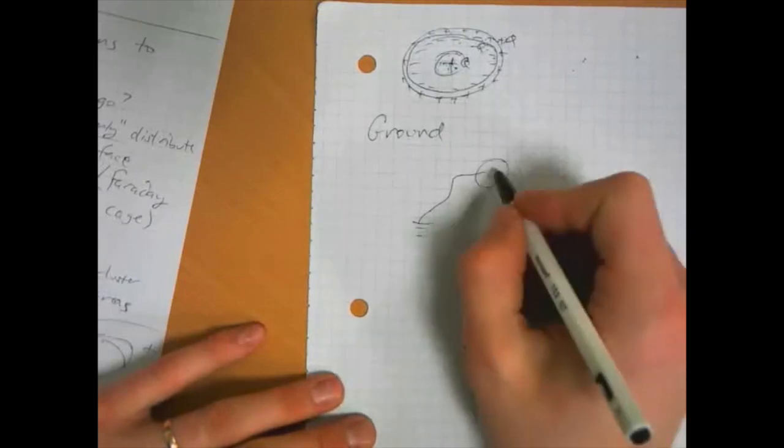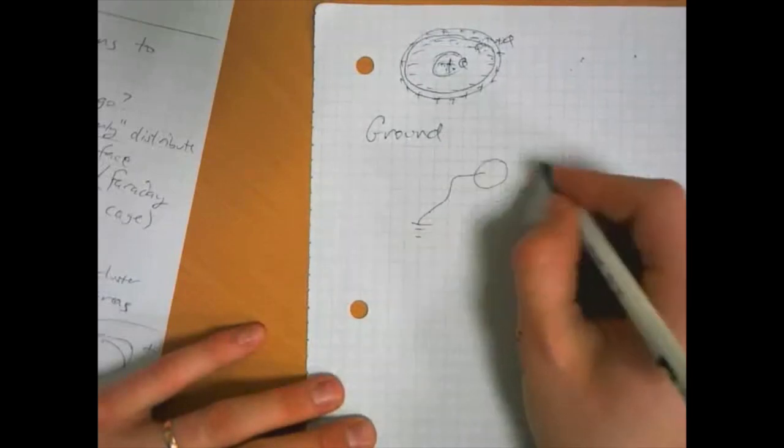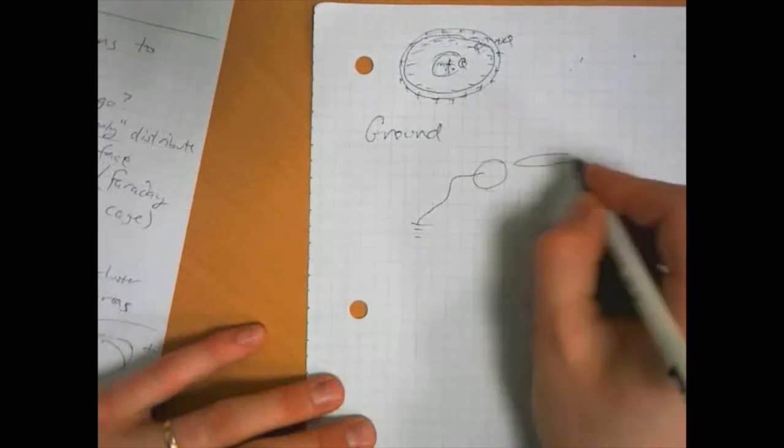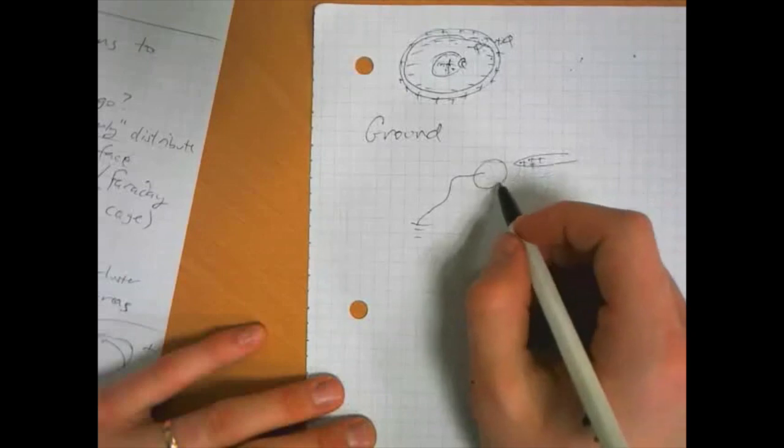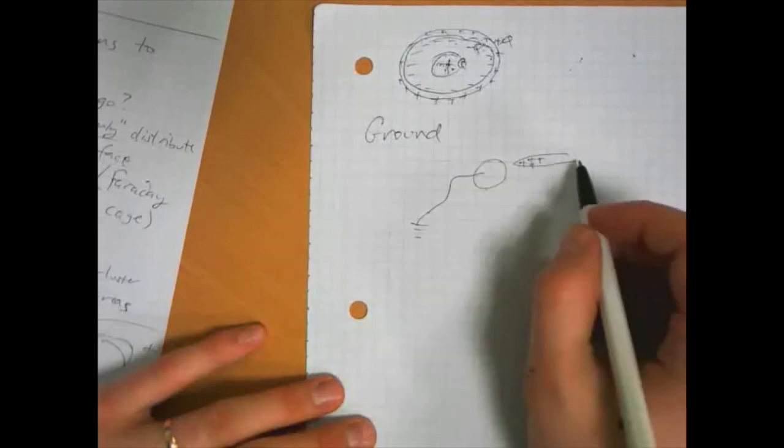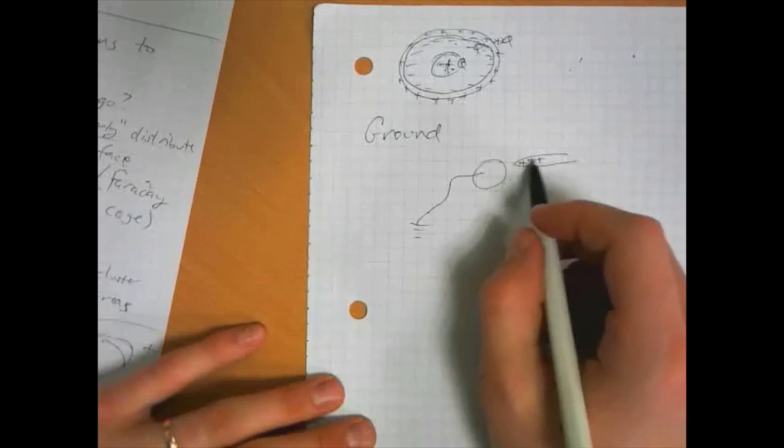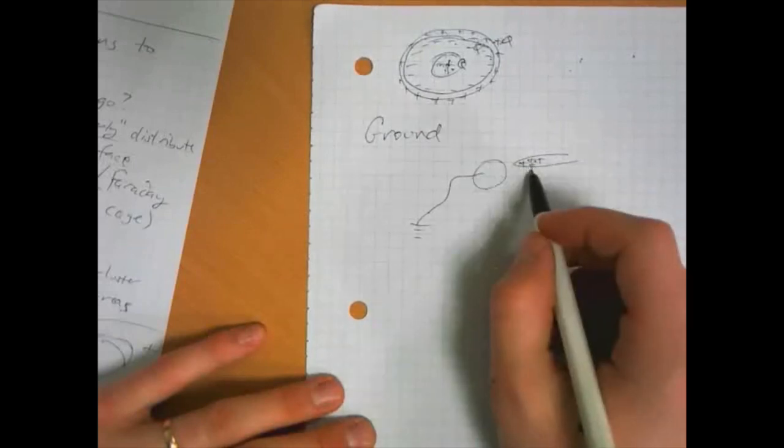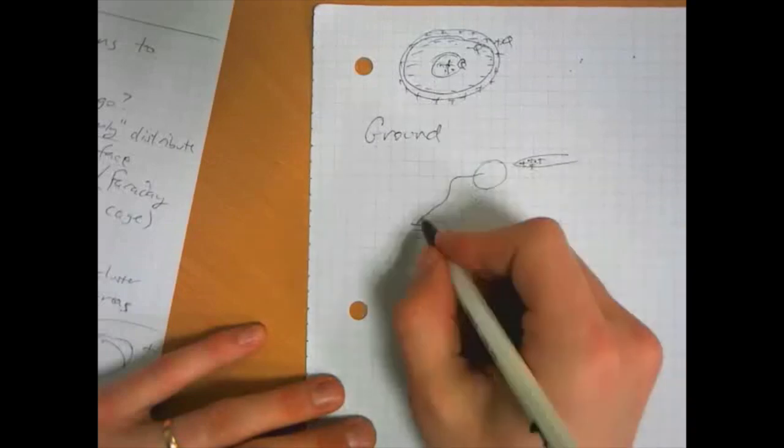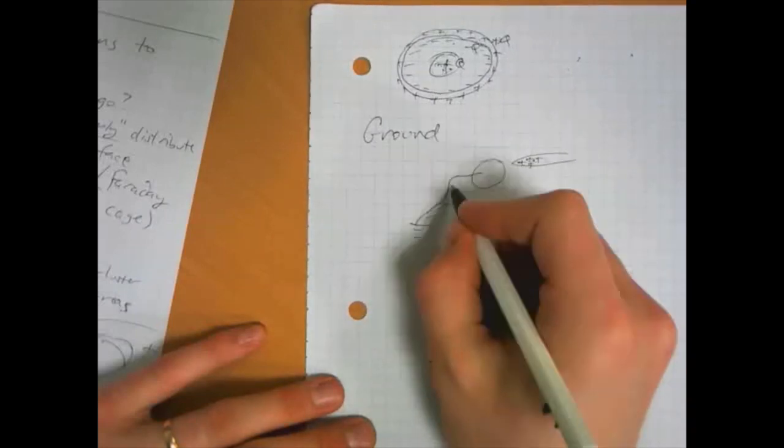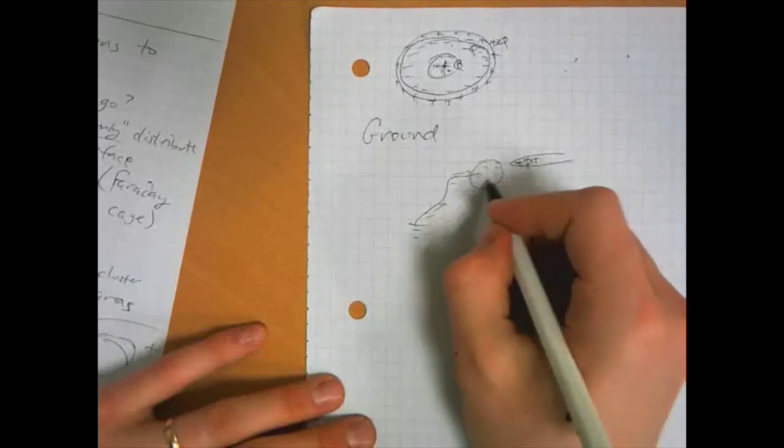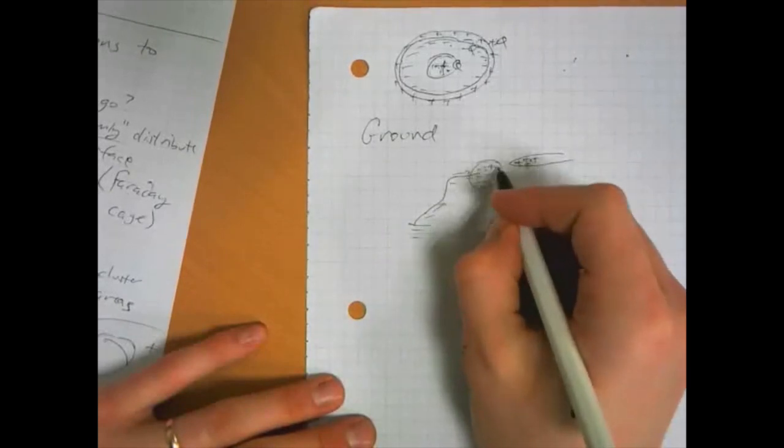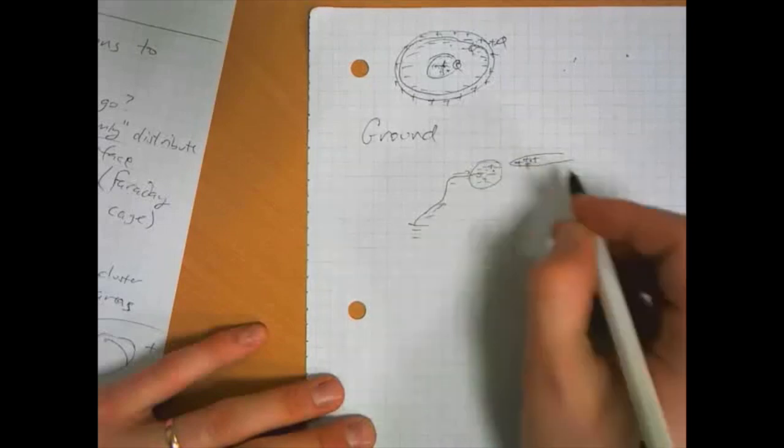So let's say we have this sphere, and it's initially neutral. And we bring a positively charged object close to the sphere. What do you think is going to happen? Pause, take a second to think about it. So these positive charges are going to attract electrons. And so electrons will flow in from the ground, giving the sphere a net negative charge. So the positive charges are there, but there are more negative charges.